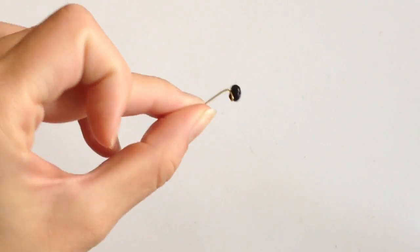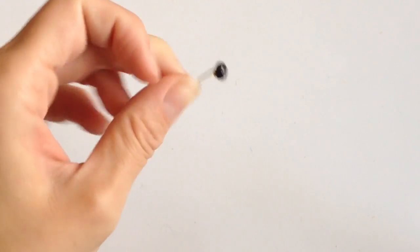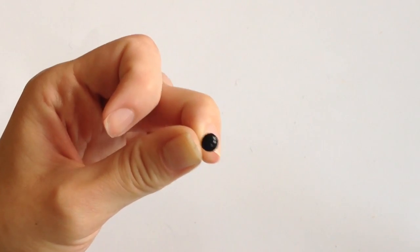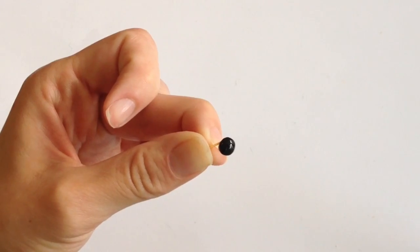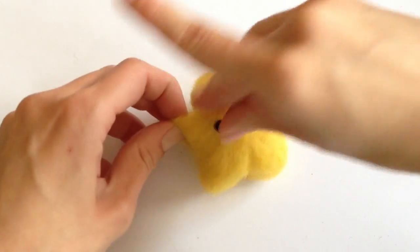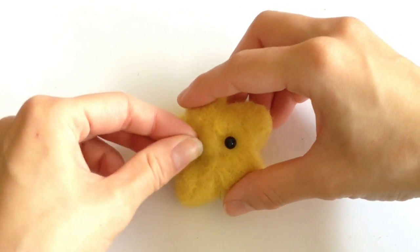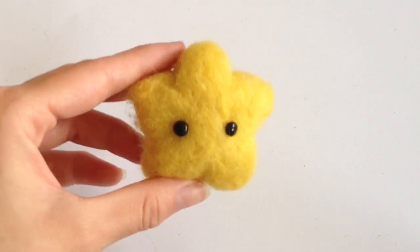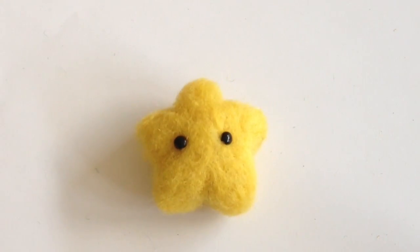I don't have any animal eyes so I made my own. I just took some black clay and super glued it to some eyelids and this will form the eyes of my star. All you have to do is insert them onto the star where you'd like them. Now if you have the animal eyes that you buy from your local craft store, those work just fine.